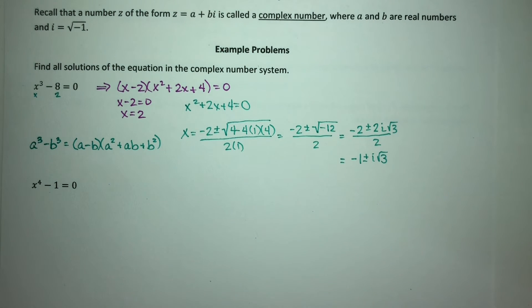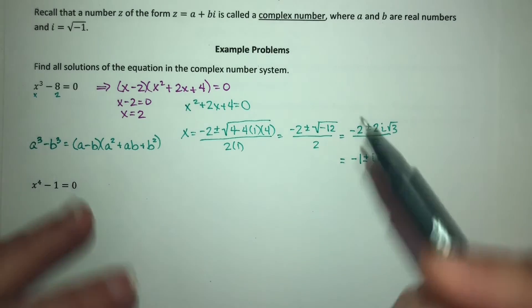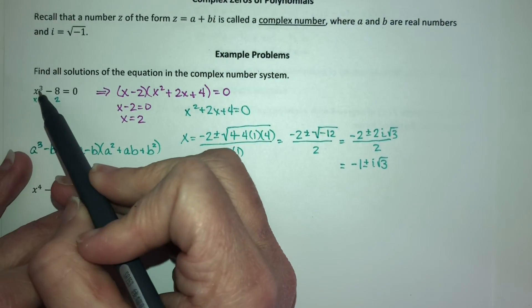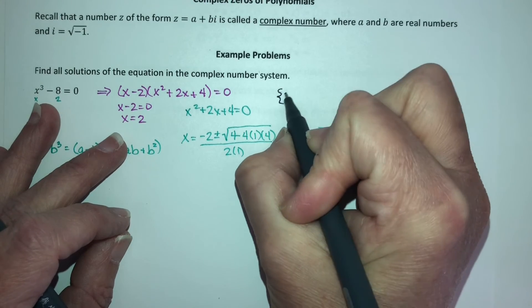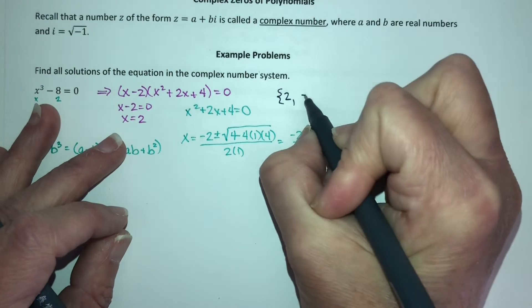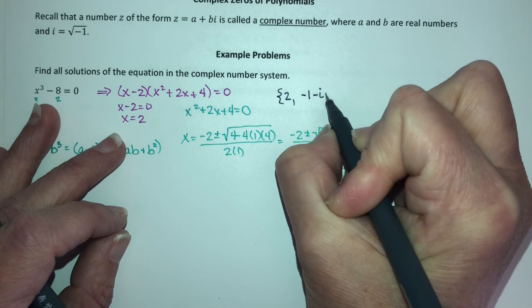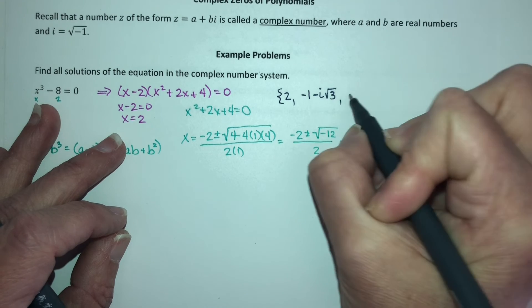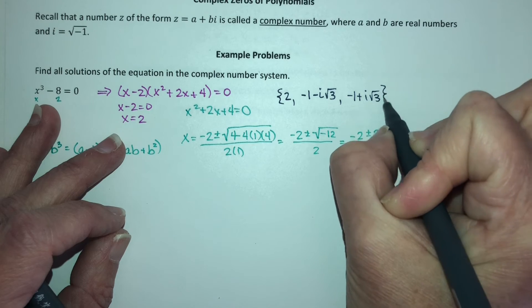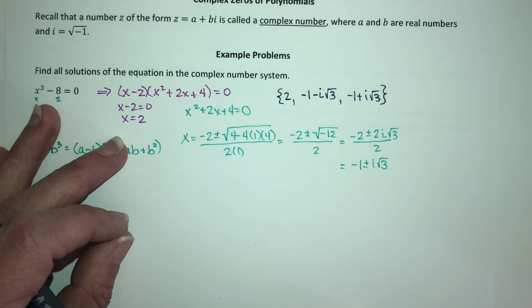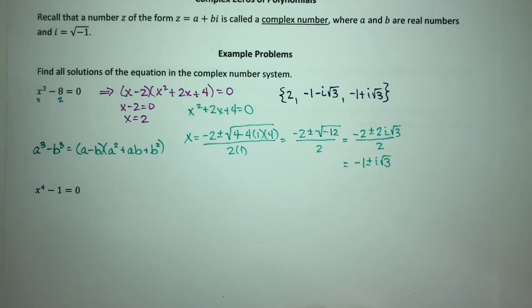So your two answers, or your three answers, which is what I expect because I have a third degree polynomial here, they are 2 and negative 1 minus i square root of 3 and negative 1 plus i square root of 3.